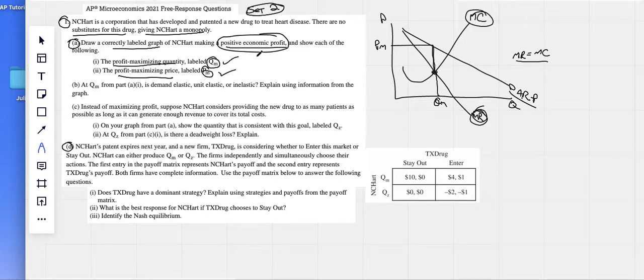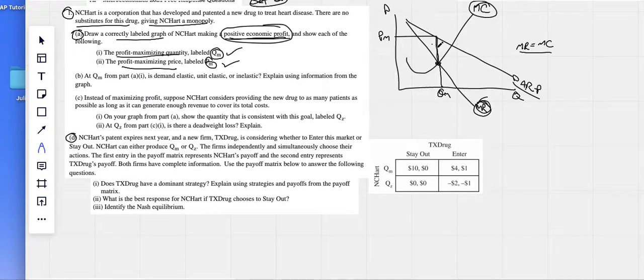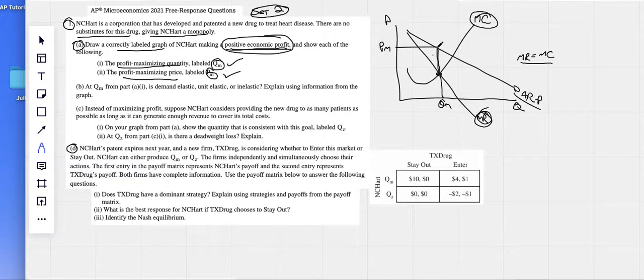Easy enough. We need to show positive economic profits. All we need to know is to show positive economic profits is to draw in an ATC that looks like that, that is below that price. And this ATC is definitely below the price.